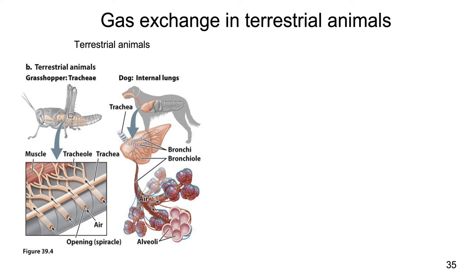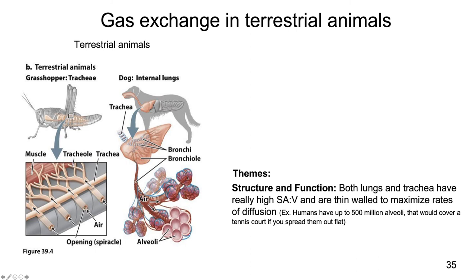The lung system works like this: the trachea are tubes that go into the lungs, then branch into bronchi, smaller bronchioles, and eventually alveoli that are innervated with capillaries from the circulatory system — blood wrapped around them for gas exchange. Both trachea and lung systems, along with the circulatory system involved in gas delivery, have a really high surface area to volume ratio. They also have very thin walls — just about one cell thick — to maximize rates of diffusion and transfer of gases.